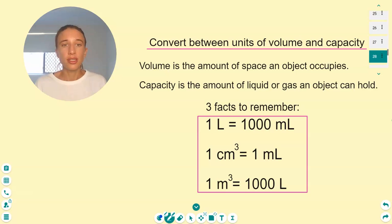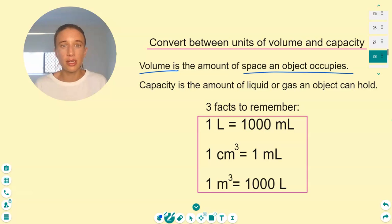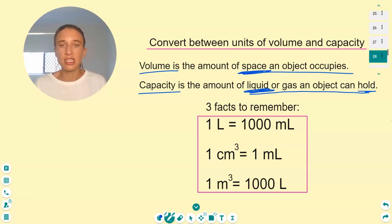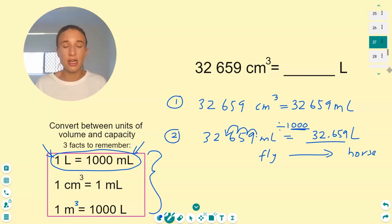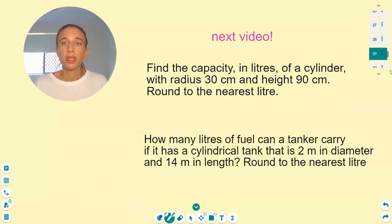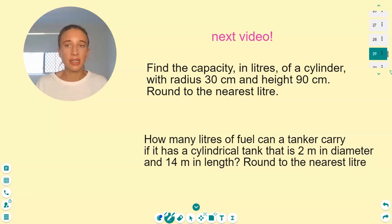Here's the summary: volume is the amount of space an object occupies; capacity is the amount of liquid or gas that an object can hold. Think liquid for capacity, space for volume, and check what units your question wants you to answer in. If it says liters, you'll need to do this process — it might take a couple of steps. In the next video we'll look at problem-solving questions, like finding the capacity in liters of a cylinder.